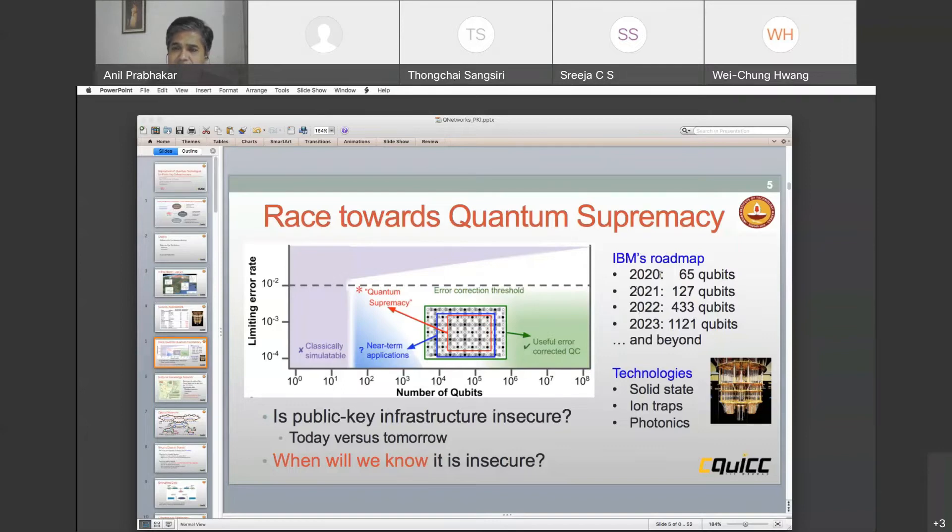I put out IBM's roadmap out here, but that's not necessarily the only computing paradigm. There are other technologies: ion traps, photonics, solid state. Today is not the time for me to talk about all of them. But it's important for us to understand that when there's this race going on towards quantum supremacy, there is a parallel race going on towards securing our public key infrastructure.